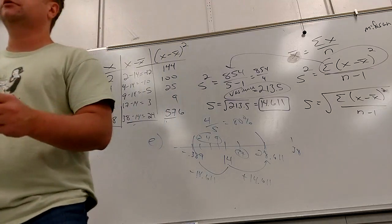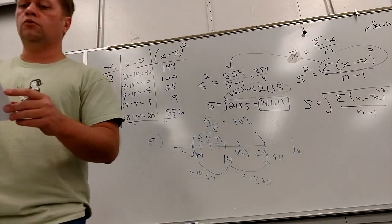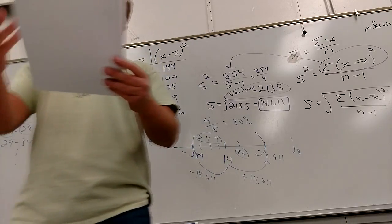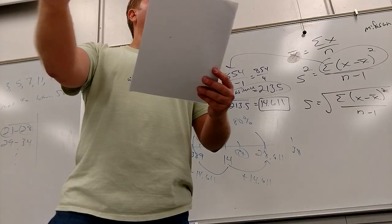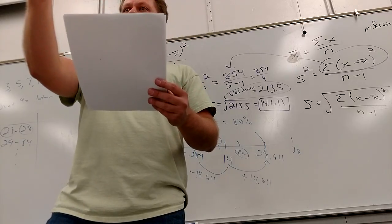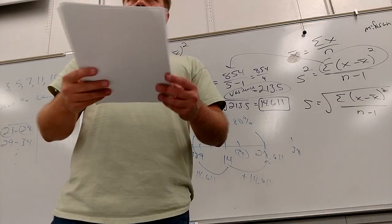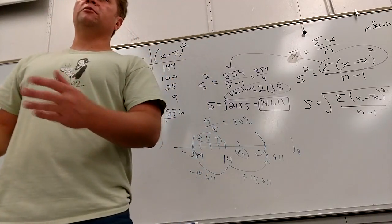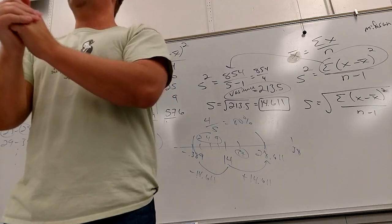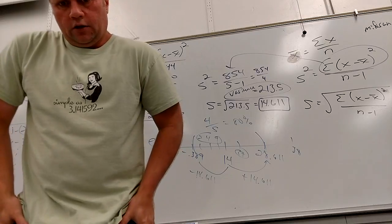I'll ask you to identify the sample and the population. The sample for 5A would be 322 telephones. The population would be all the telephones at the factory. If you just say 'all telephones' I'm going to be a stickler — even outside the factory, over in Sweden? So it's got to be specific about your population. Yeah, B is the same thing.